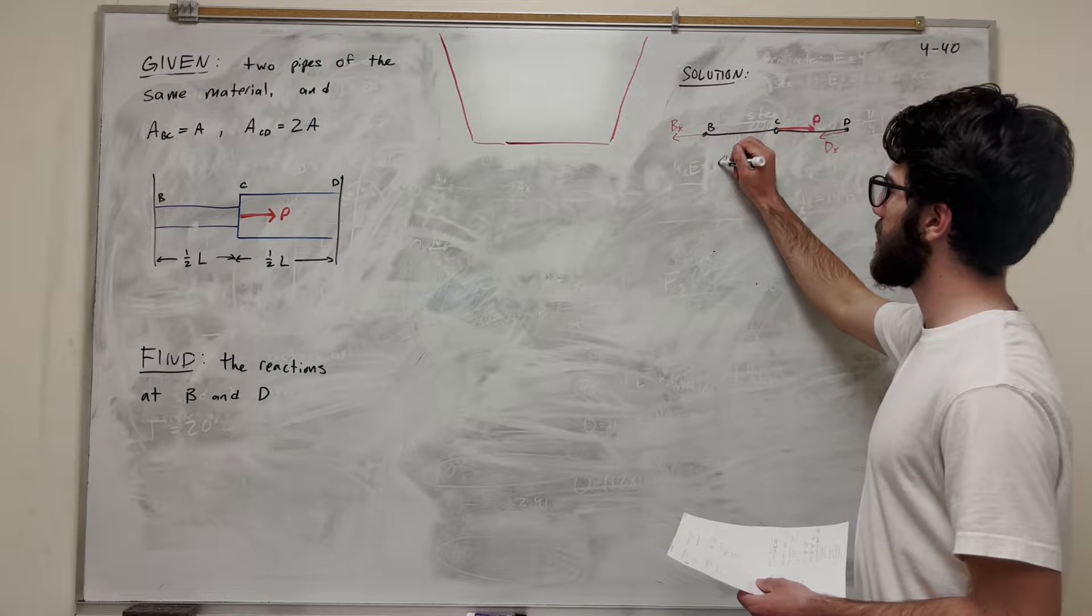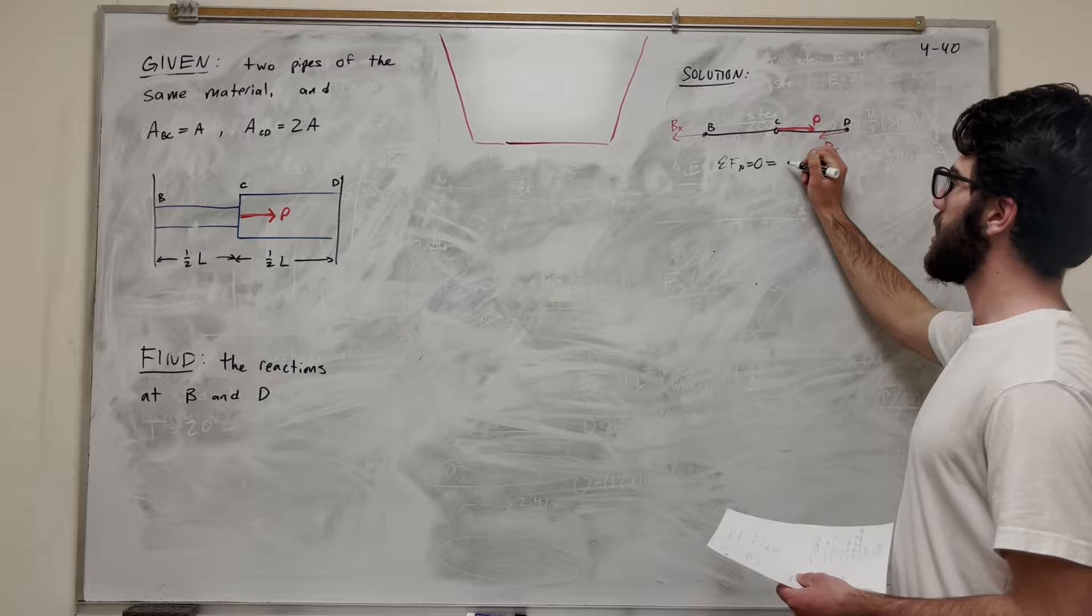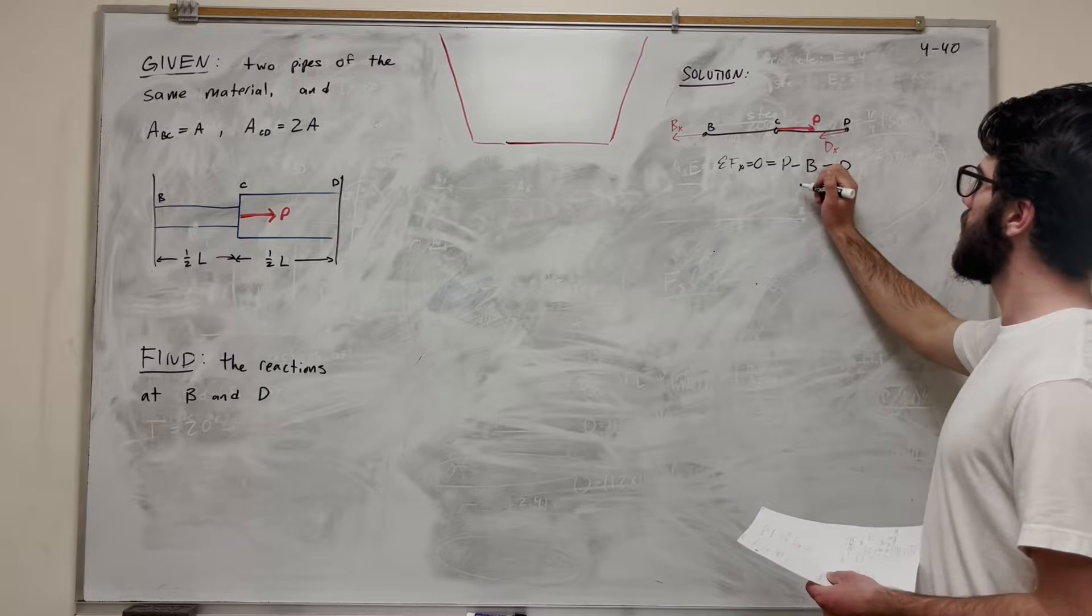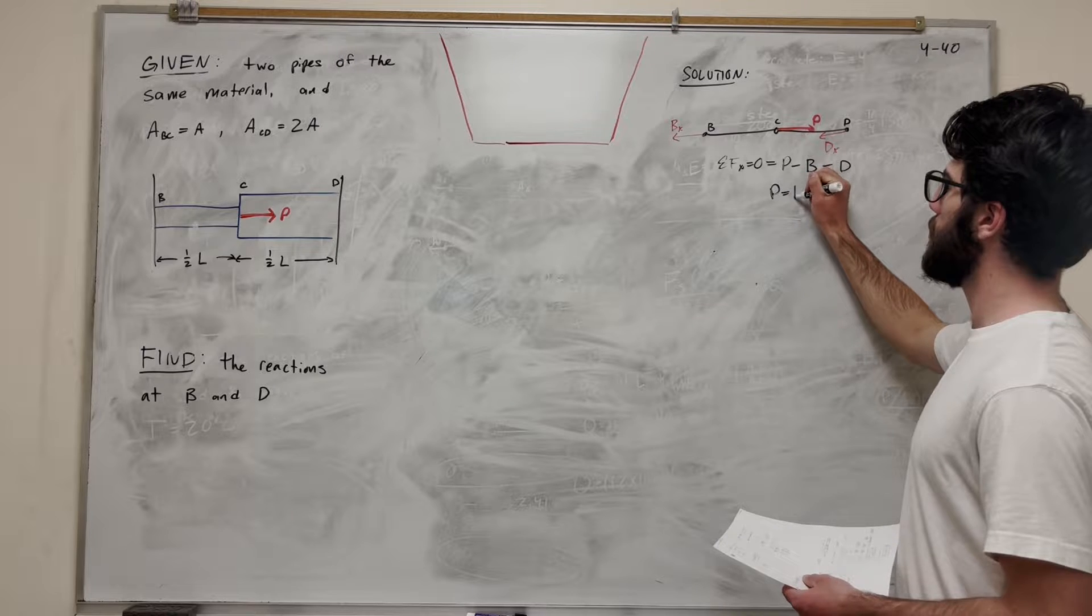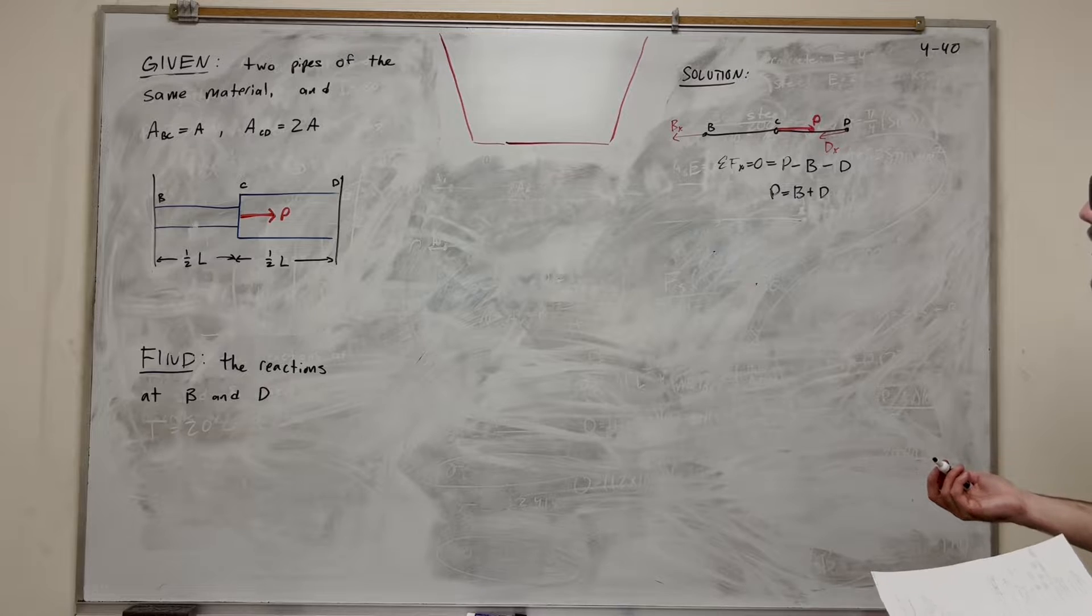So if we do sum of the forces in the x, we know it's equal to zero. That's going to be equal to P minus B minus D. So we're going to get that P is equal to B plus D. Right? Makes sense.